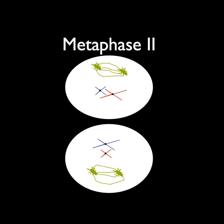Now begins metaphase 2, in which the chromosomes line up on either side of the cell and the spindle fibers that span the cell attach to each at their centromeres.